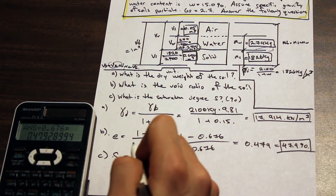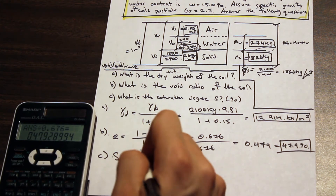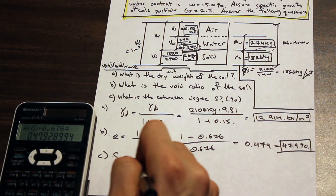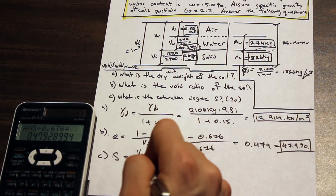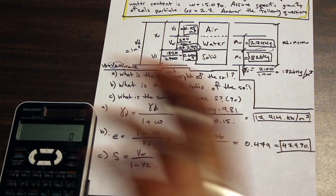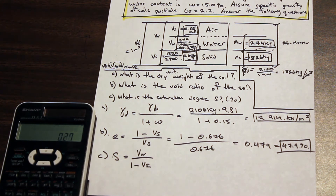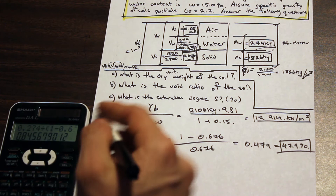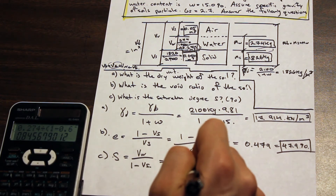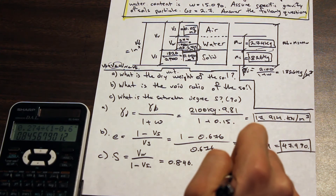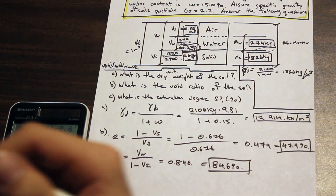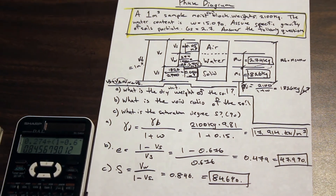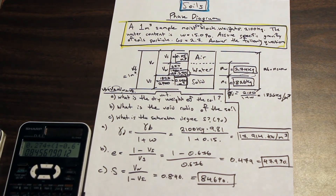Finally, we solve for the degree of saturation. The formula is: volume of water divided by (1 minus volume of solids). As long as volume of water and volume of solids are in the same units, this works out. So: 0.274 divided by (1 minus 0.676) gives us 0.846, which equals 84.6% saturated. That's it — a typical question you'd see on a first soils exam in civil engineering. Hope you enjoyed it, and as always, like and subscribe.